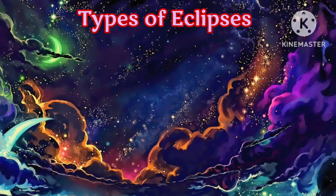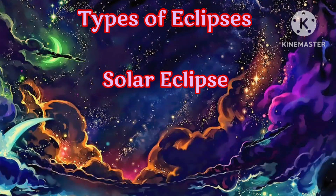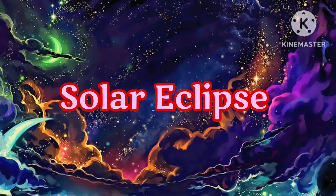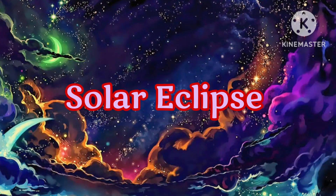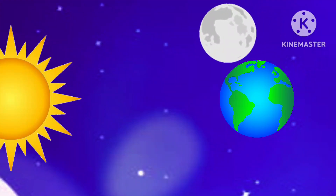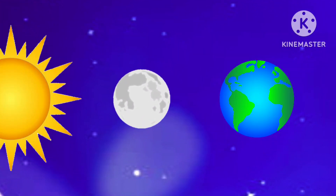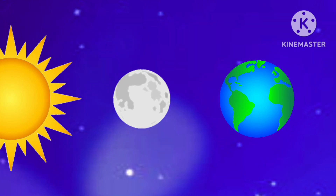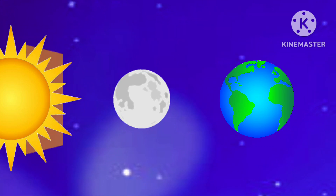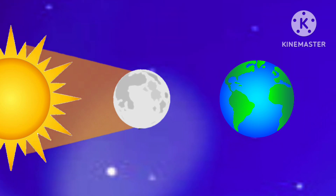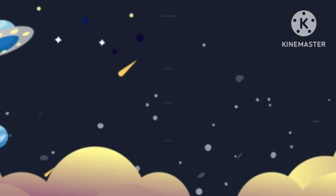There are two types of eclipse: solar eclipse and lunar eclipse. First, let's see what is solar eclipse. Solar eclipse occurs when the moon comes in between the sun and the earth. As a result, the moon blocks the light of the sun from reaching the earth's surface and casts a shadow on it.